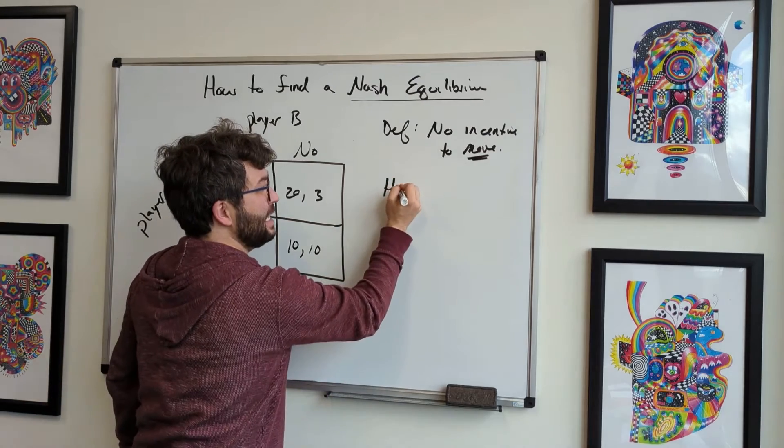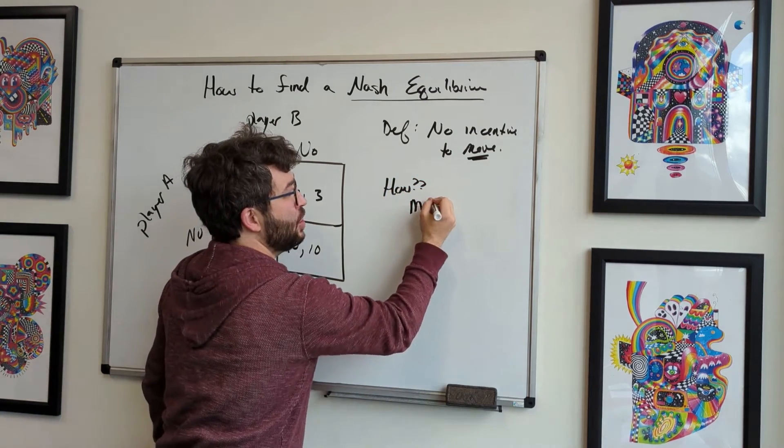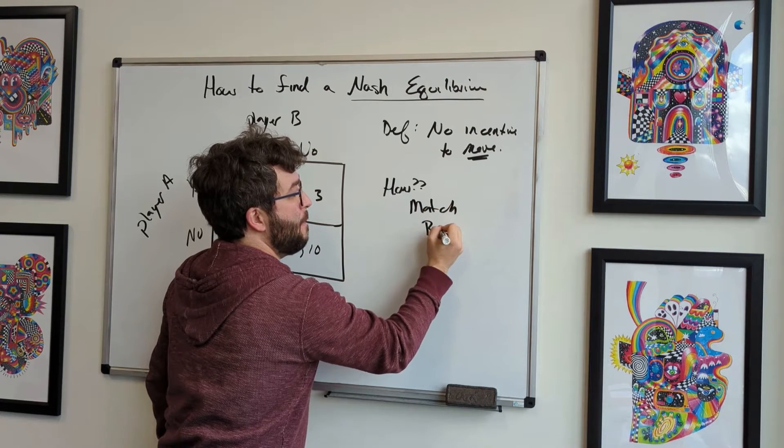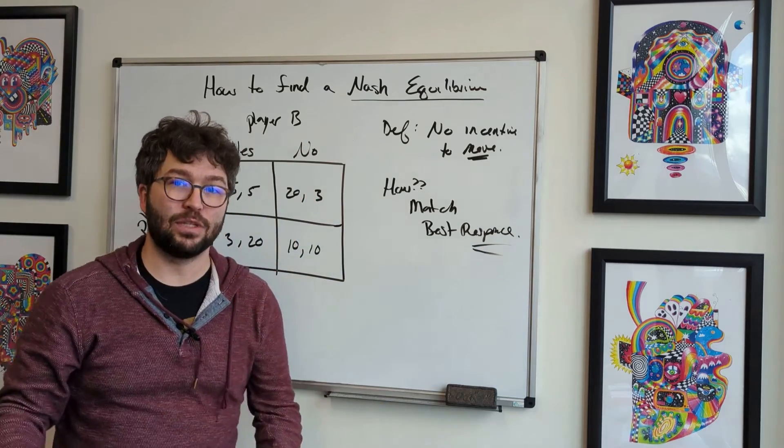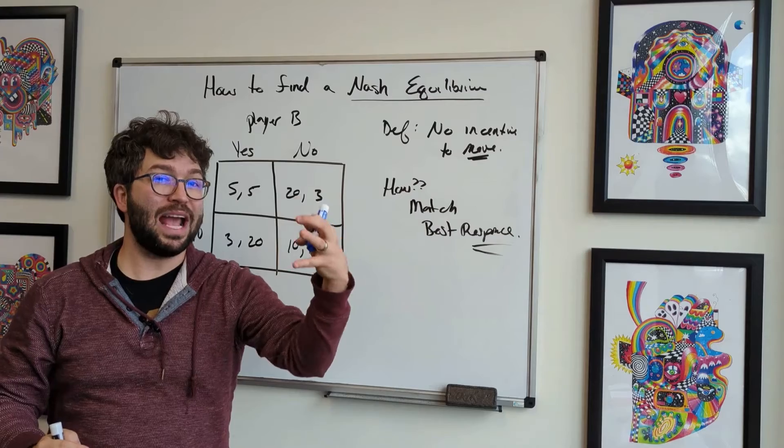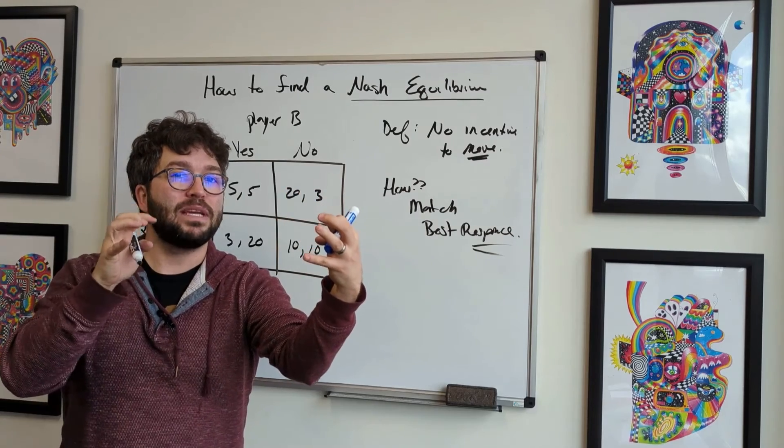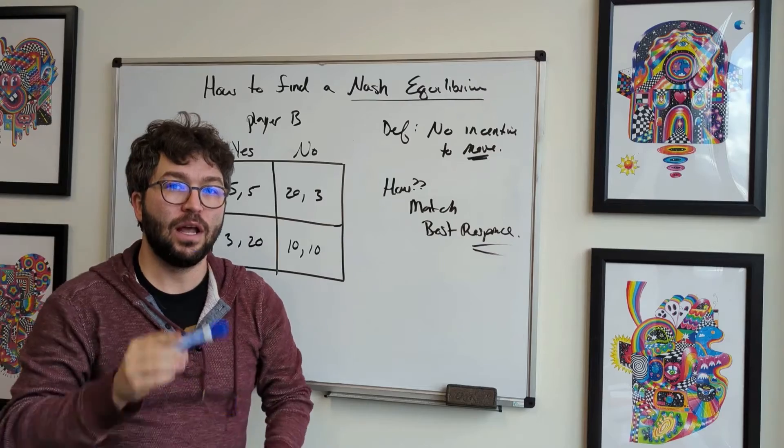And how exactly are we going to do this? Well, we're going to try and match what we call the best response. So we're going to find the best response. When we say best response, it's this player over here, player A is playing something. What is player B's best response? What's going to be the best thing for them to do? Let's do that.